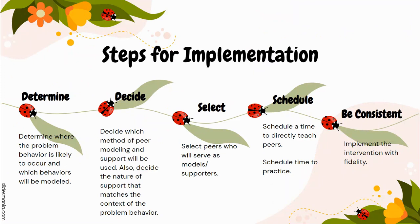Here are the steps for implementation. First, determine the contexts in which the problem behavior occurs for accessing peer attention. Determine the behaviors to be modeled and work on a script for the peer or peers to follow — providing words and actions they can use to model the expectations and practice how they can model them before beginning to work with their target peer.